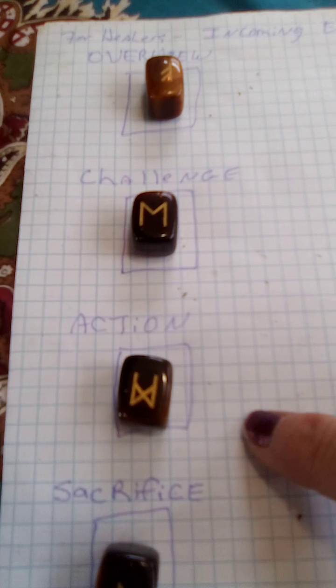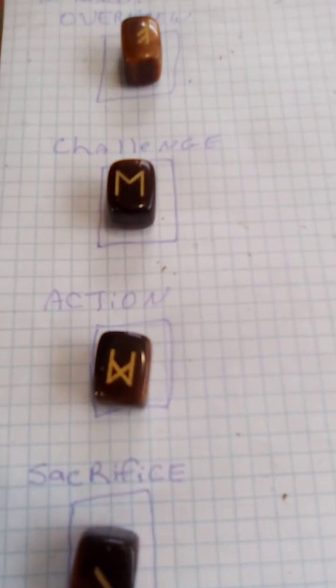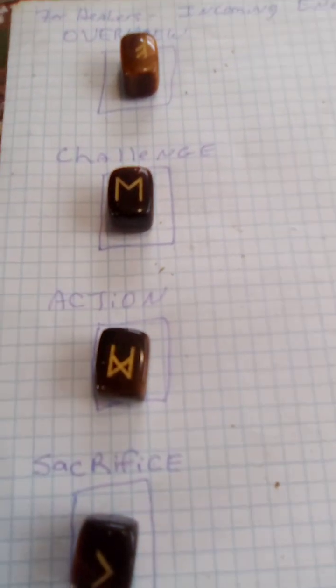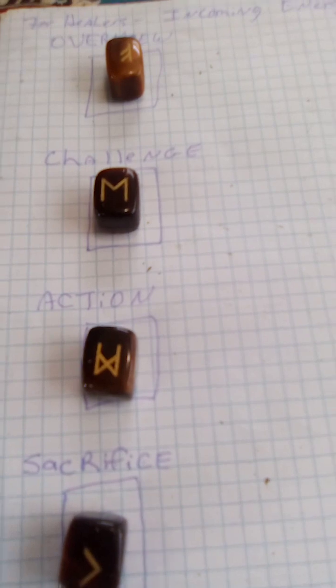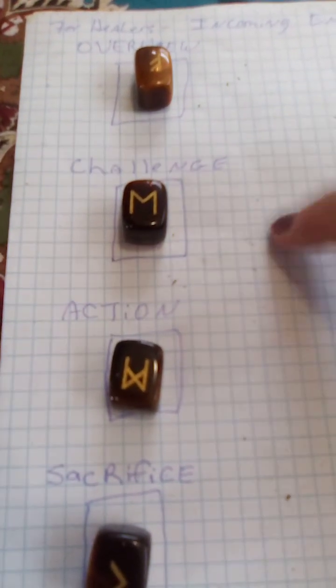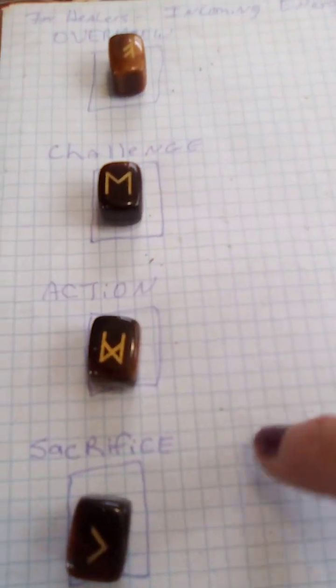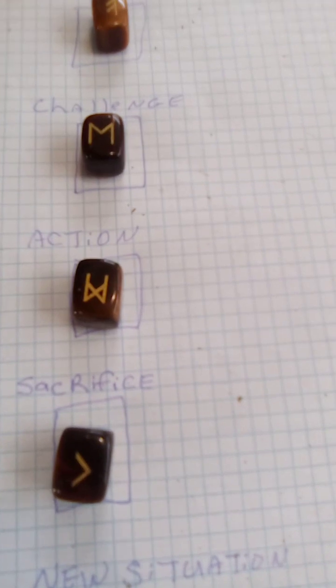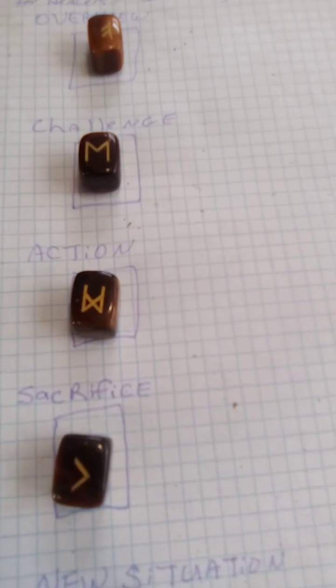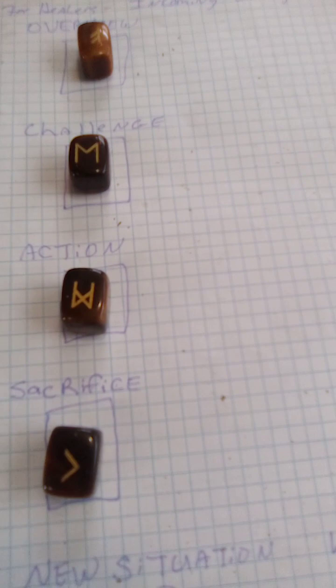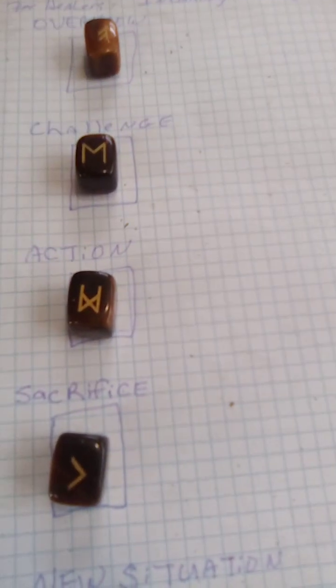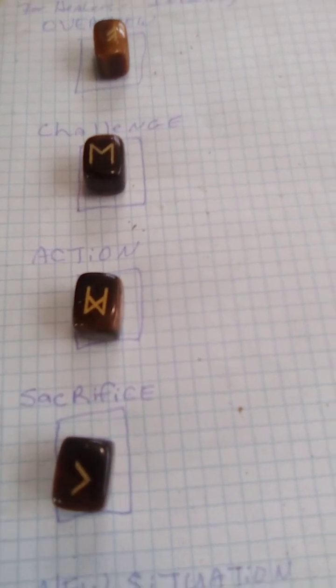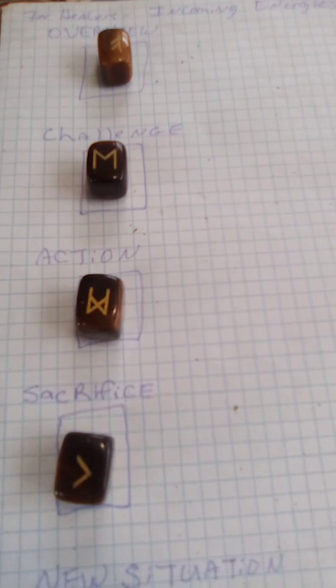For your action, you've got man reversed. Man is the rune of mankind, and that's the action it's telling you to take. Because you've got Ewaz in your challenge position, somebody is not going to have your best interest at heart. Somebody's going to be either jealous of you or they're not going to want you to move forward on your healing journey. They're not going to be really happy with that. Stay true to yourself. To thine own self be true.